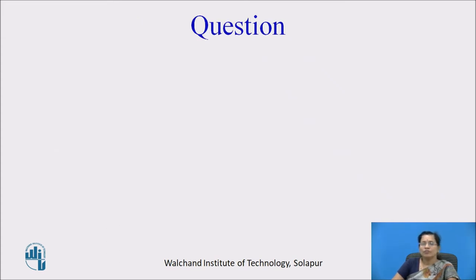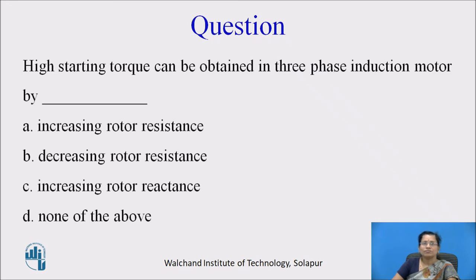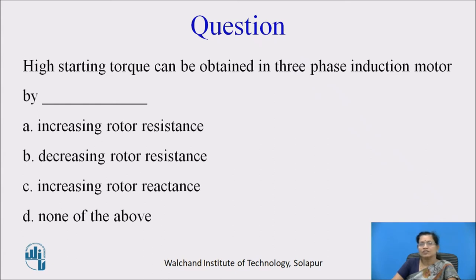Pause the video and think about this question: High starting torque can be obtained in a three-phase induction motor by — (a) increasing rotor resistance, (b) decreasing rotor resistance, (c) increasing rotor reactance. By changing rotor resistance, we can change the torque as well.